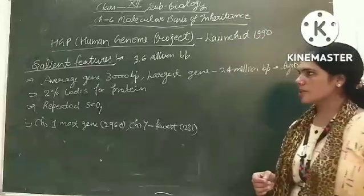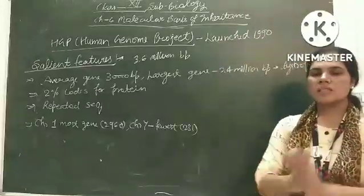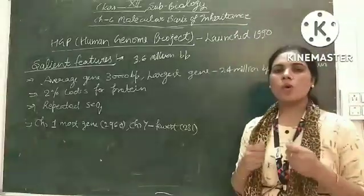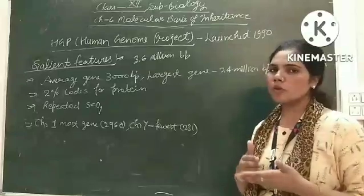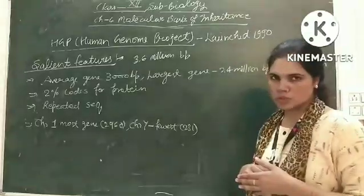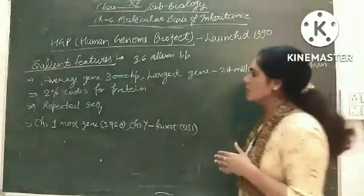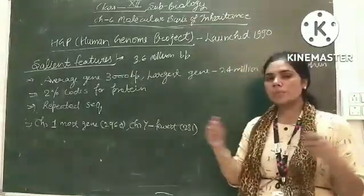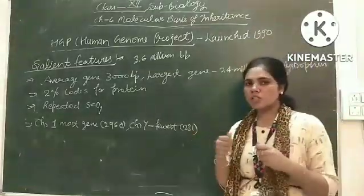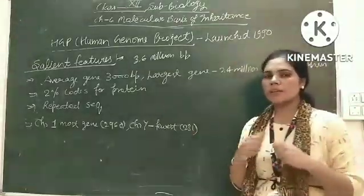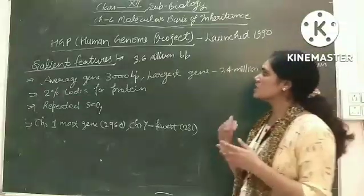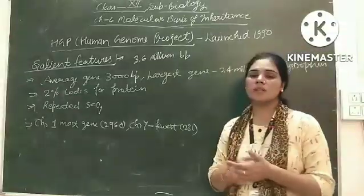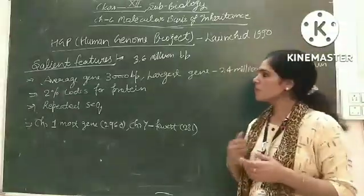It's about the human genome project. The salient features — what information we got from the human genome project. First, the complete human genome: complete human DNA has 3.6 million base pairs.